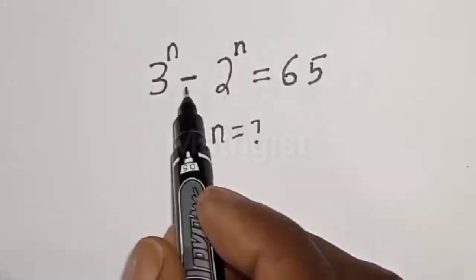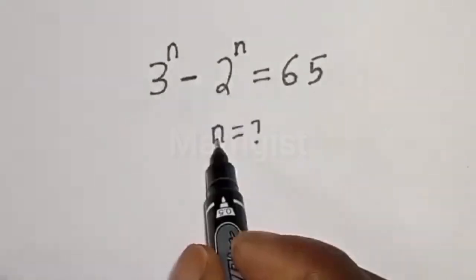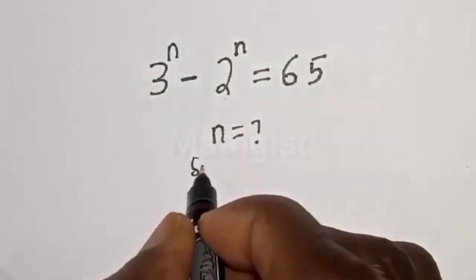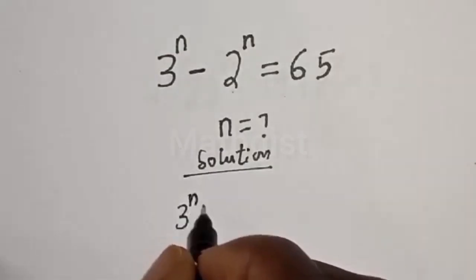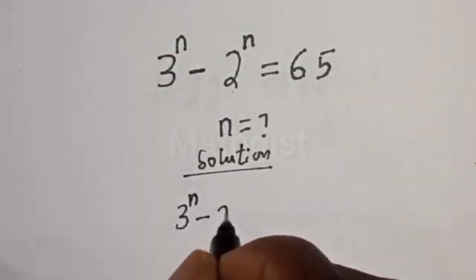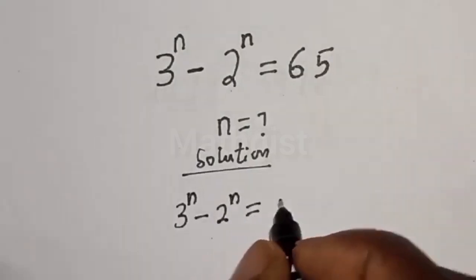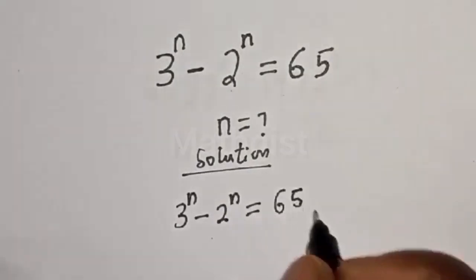3 raised to power n minus 2 raised to power n is equal to 65. What is the value of n? Solution: 3 raised to power n minus 2 raised to power n is equal to 65.